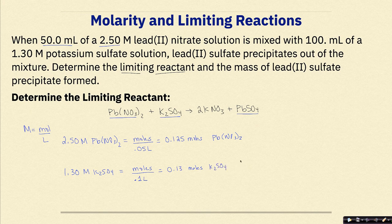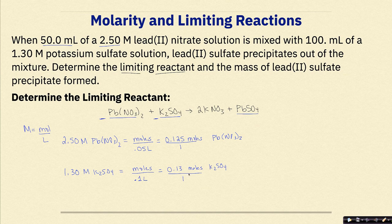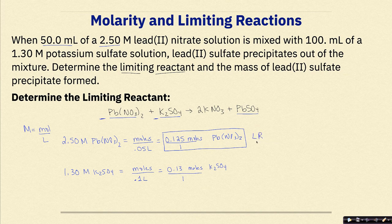Now we look at the balanced equation: Pb(NO₃)₂ has an assumed coefficient of 1, and K₂SO₄ also has an assumed coefficient of 1. So we divide each by their respective coefficients: 0.125 ÷ 1 = 0.125 for Pb(NO₃)₂, and 0.13 ÷ 1 = 0.13 for K₂SO₄. The smaller number belongs to Pb(NO₃)₂ — this is the limiting reactant. And this is why it's so important not to round; they're close, but 0.125 is still smaller than 0.13.